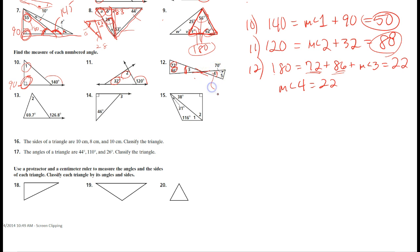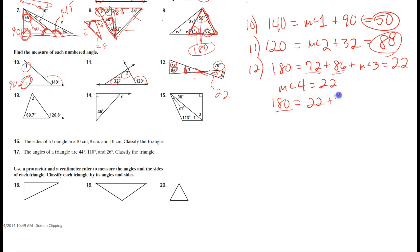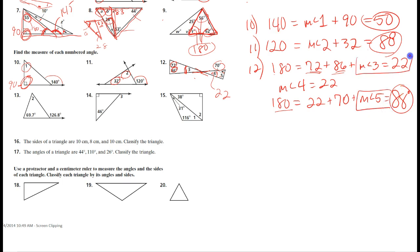Now, knowing angle four is twenty-two and this corner is seventy, I use the triangle sum theorem again: one hundred and eighty equals twenty-two plus seventy plus the measure of angle five. The measure of angle five turns out to be eighty-eight degrees.